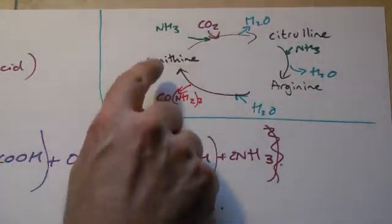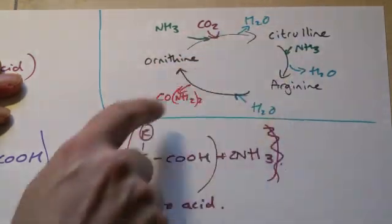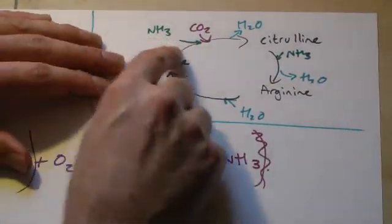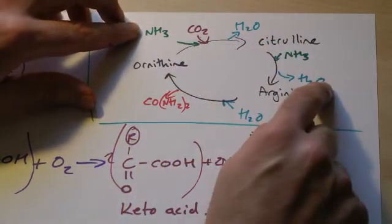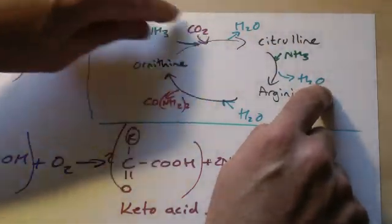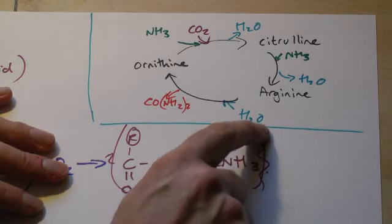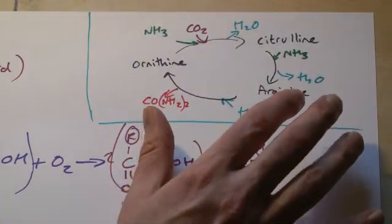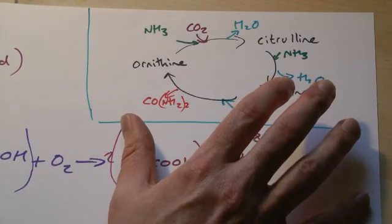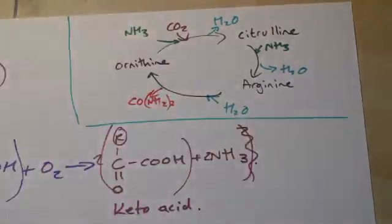Okay, so if you can remember ornithine, citrulline, arginine, and then think ammonia goes in the first two, water comes out the first two, carbon dioxide goes in on the first one, and water goes in on the last one. That doesn't sound very easy, does it? There's no simple method, I'm afraid, to remember it. It's just one you're going to have to graft through.